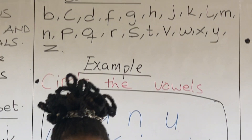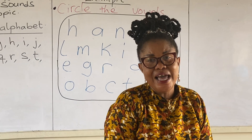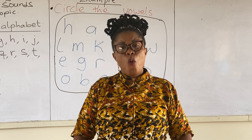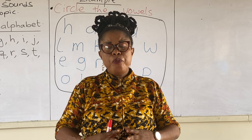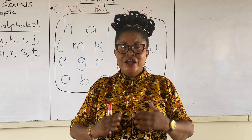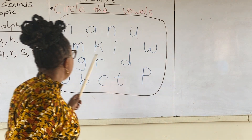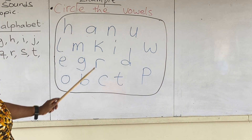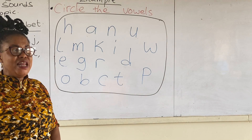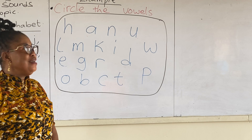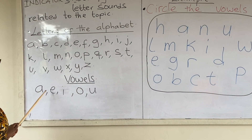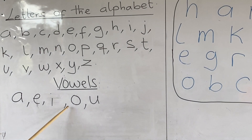These are the consonants within the letters of the alphabet. And as I said earlier, words are formed by putting consonants and vowels together. On the board, I have a box with a mixture of letters of the alphabet here. Let's see whether we can identify the vowels within these letters. The vowels are A, E, I, O, U.